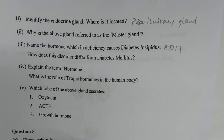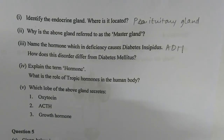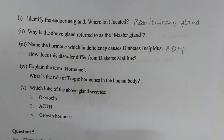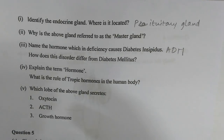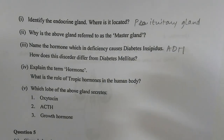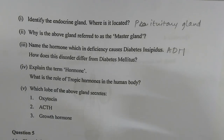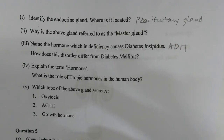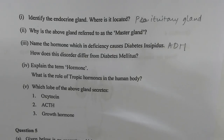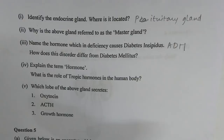Number three — name the hormone whose deficiency causes diabetes mellitus. The hormone is ADH (antidiuretic hormone). How does this disorder differ from diabetes mellitus? In diabetes mellitus, the urine contains sugar due to insufficient insulin, but in diabetes insipidus there is no sugar in the urine. Number four — explain the term 'hormone'. Hormones are organic secretions from glandular parts of the body that function in the regulation of physiological activities and in maintaining homeostasis.